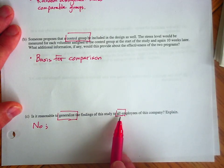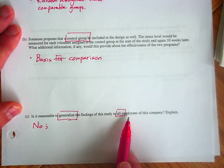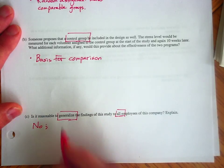The key is the word all. We can't generalize this study to all employees because this is not an experiment that is being done on all employees of this company. We are using volunteers. The truth is we have not randomly selected from the entire population of employees of this company, so we can't generalize the results to all of the employees of this particular company.